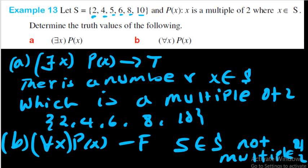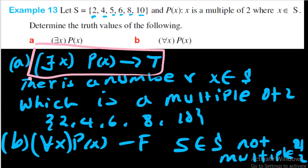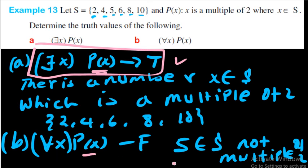The existential quantifier is close to being true — if you can find even one number from the domain that satisfies the condition P(x), it is true. One individual is enough. The universal quantifier, however, is close to being false — if even one number from the domain cannot satisfy the condition P(x), the whole statement is false.